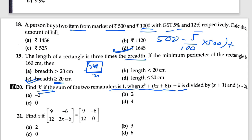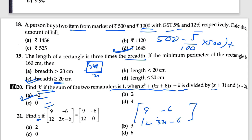Question 21: find the value of x in the given coordinates. Using the matrix condition: 9, 12 minus 6, 3x minus 6 should equal 9 minus 6, 12 and 0. Solving: x equals 6 over 3, which simplifies to 2. Find out the answer as 2.